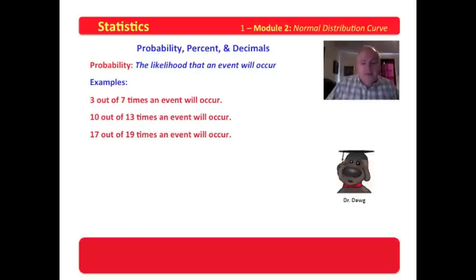Now, if you look at these just a moment, you see that they're very difficult to compare. Three out of seven, ten out of thirteen, seventeen out of nineteen, those are very difficult to compare. Do you see the need that we might have to standardize when we start talking about probability?